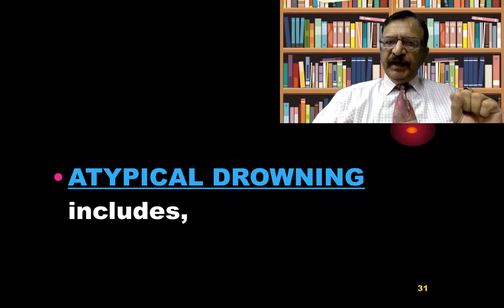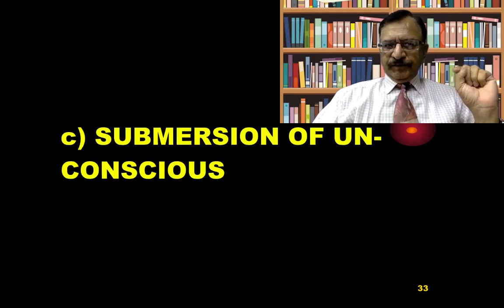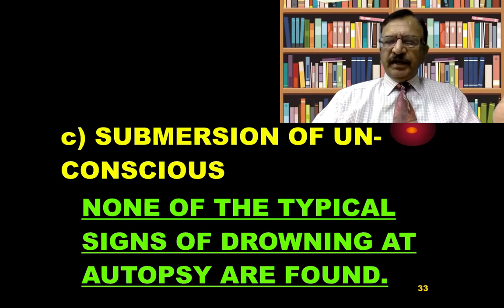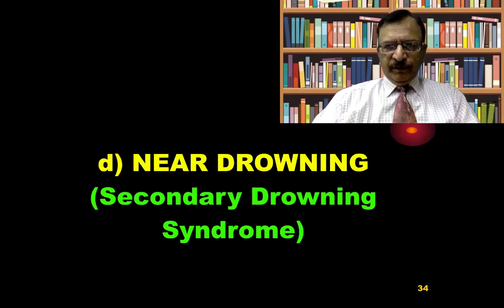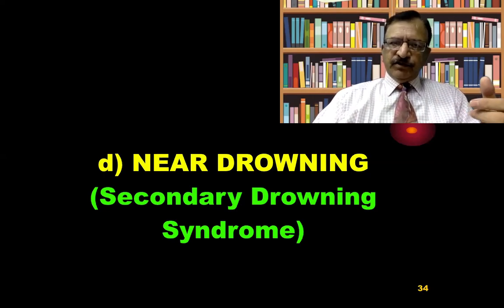Atypical drowning includes dry drowning and immersion syndrome, which is vagal inhibition, or submersion unconsciousness — none of the typical atypical signs are found at autopsy in this type of drowning. Then there is near drowning, also called secondary drowning syndrome, which refers to complications after resuscitation — the person is rescued but develops complications, and that is called near drowning.